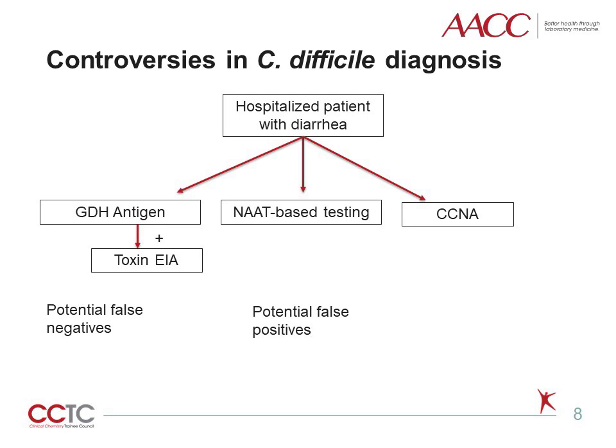The decision to use toxin or NAT-based testing has been a controversial topic in the infectious disease community. Because asymptomatic carriers can have a positive GDH EIA or NAT test even when there is an alternative cause of diarrhea, some experts advise against using these as a single-step test due to the risk of false positives. The high negative predictive value of NAT or GDH EIA makes these appropriate initial tests in a two-step algorithm, followed by toxin EIAs to confirm the diagnosis.